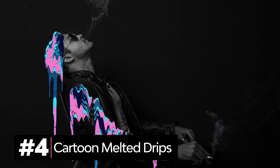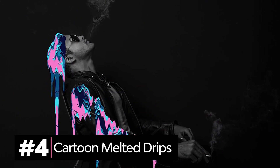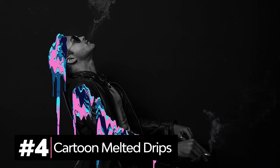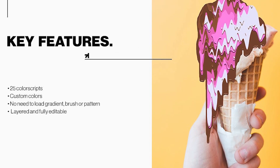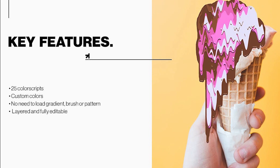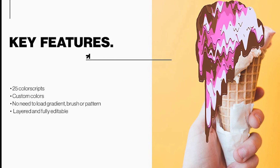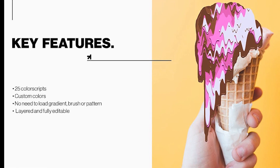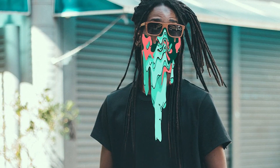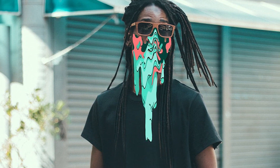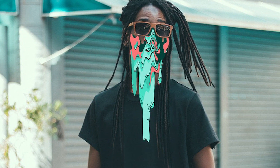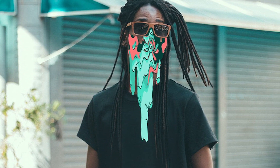Dripping faucets? Bad. Dripping artwork? Well, just look for yourself. The Cool Melted Drips action lets you add a colorful cartoon slime effect to your shots. It comes with 25 color scripts and custom colors, and you'll also be able to create effects without loading gradients, brushes or patterns.